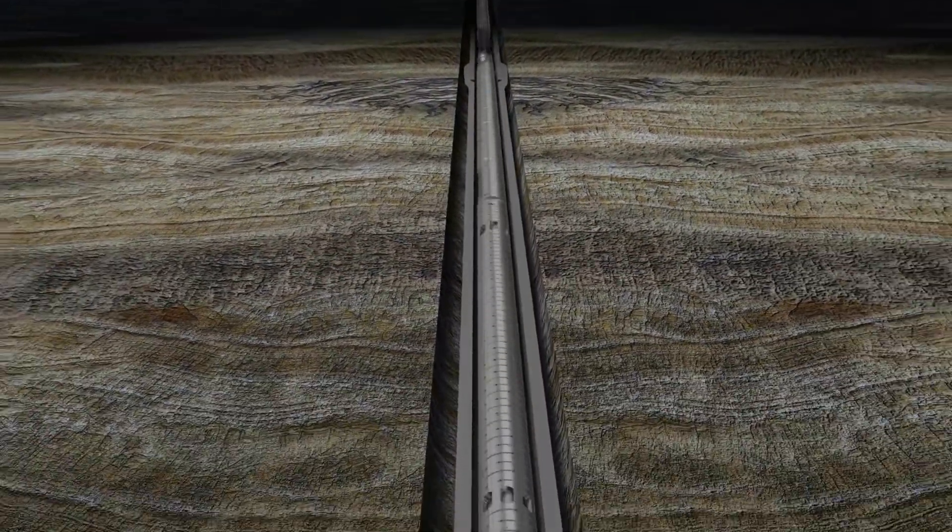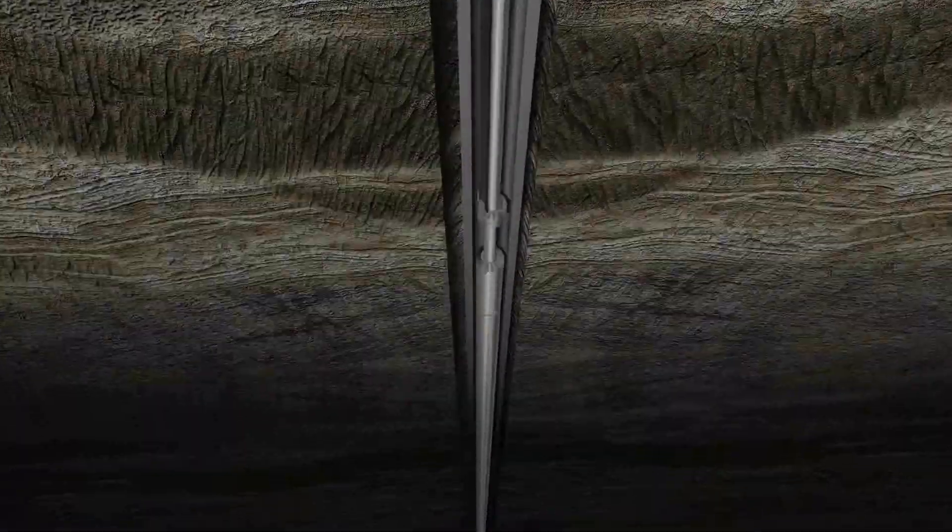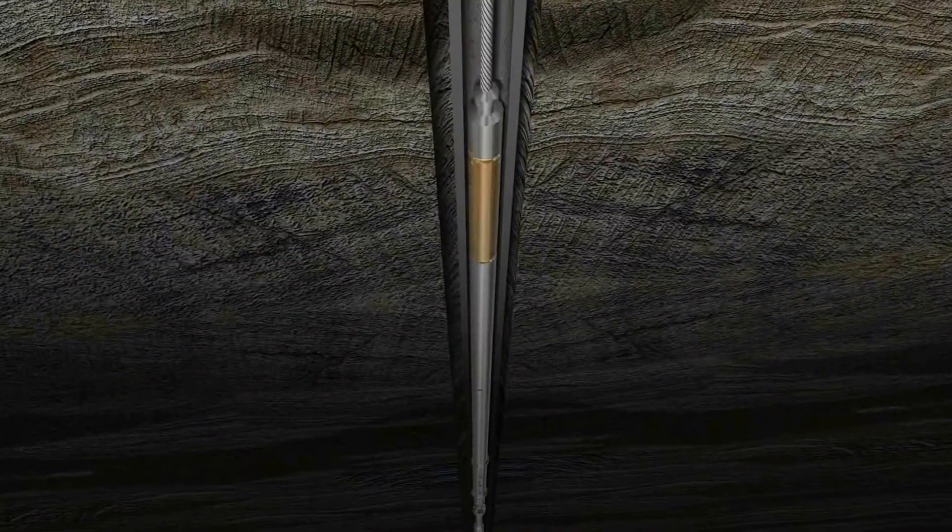With the MicroSlim tools rigged up at surface, the string is then run down hole inside drill pipe providing a real-time down log.